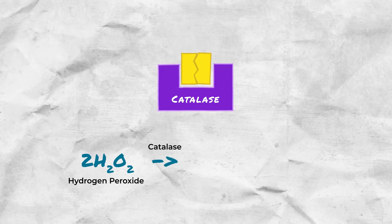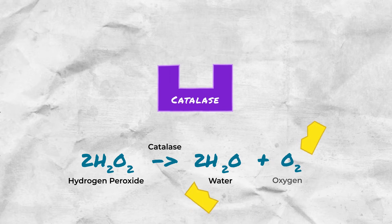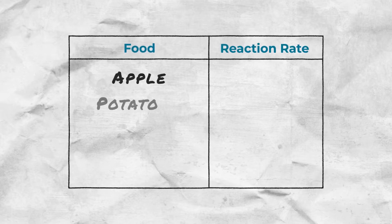Catalase breaks down hydrogen peroxide, which is poisonous, into two harmless substances such as water and oxygen. Cells in your body are always making poisonous chemicals. Therefore, it's the enzyme's job to speed up breaking down these things so they don't harm your cells.